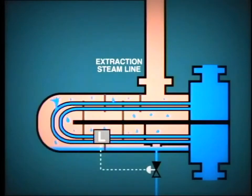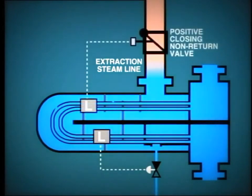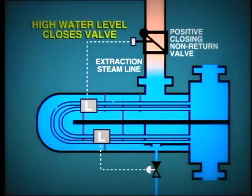One highly dangerous condition that can occur is internal tube leakage. In this situation, condensate could pass directly into the shell of the heater and rapidly fill the space inside. This water could then pass back up through the extraction line and into the turbine. As we have mentioned several times before, this is prevented by the positive closing non-return valves on the extraction lines, which close when high water levels occur in the heater.